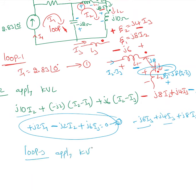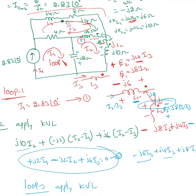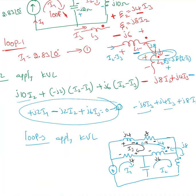Now for Loop 3, applying KVL. Drawing Loop 3 and writing the KVL, I start with the self-induced voltages and voltage drops across resistors: j4·I3 + 8·I3 + j6·(I3 − I2) + 4·(I3 − I1). Those are the self-induced and resistive voltage terms. Now we add the mutual inductance contributions.